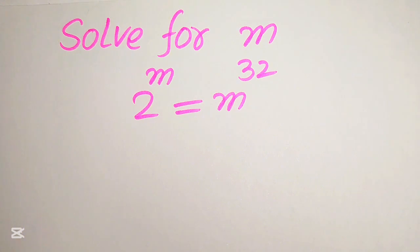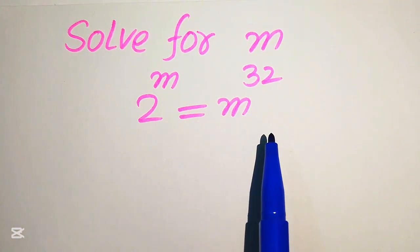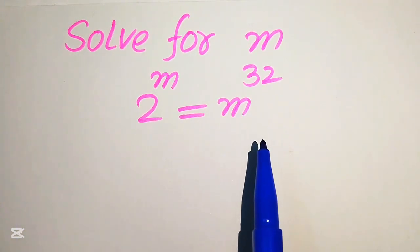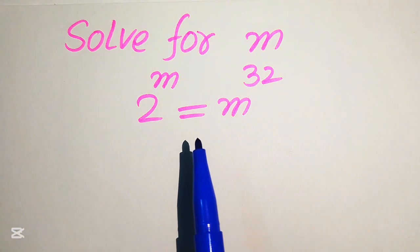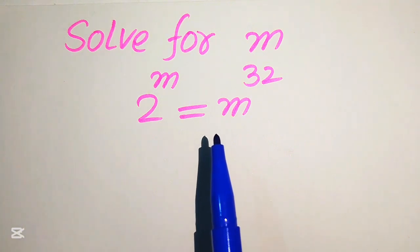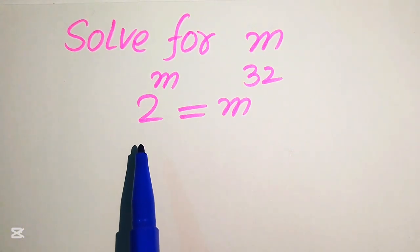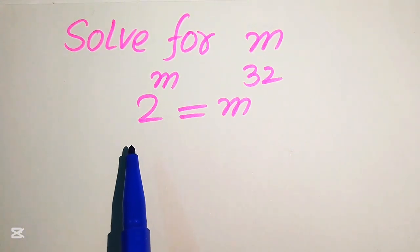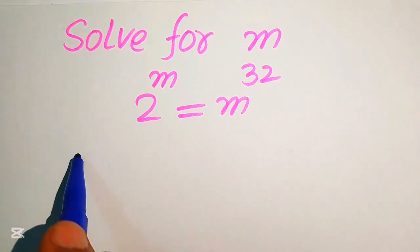In this problem, our first target is to move all the variable terms to the right hand side and move the constant terms to the left hand side. First we move the variable term to the right hand side — for this we need to eliminate this m from the left hand side.